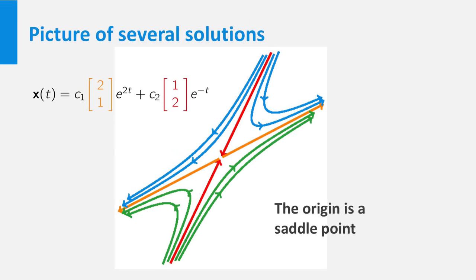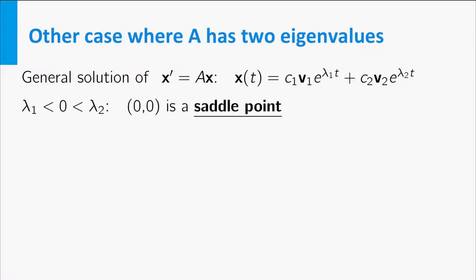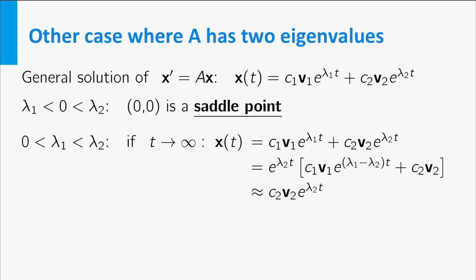It arises whenever the matrix has both a positive and a negative eigenvalue. For 2×2 matrices with two different eigenvalues, there are two other situations. In the case where the matrix A has two positive eigenvalues, λ₁ and λ₂, say λ₂ larger than λ₁, we again find that the general solution is a linear combination of two solutions containing the eigenvalues and the eigenvectors.